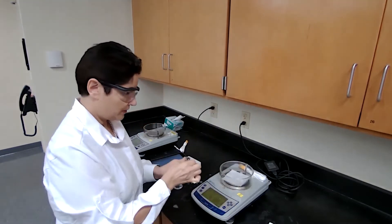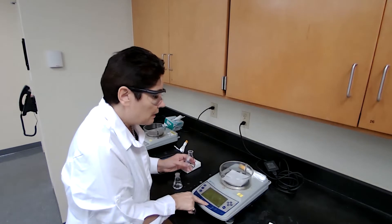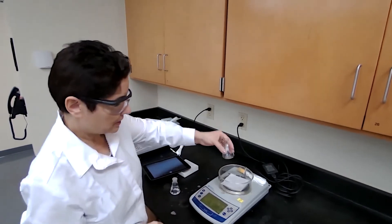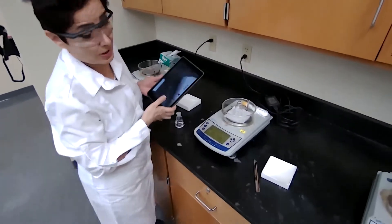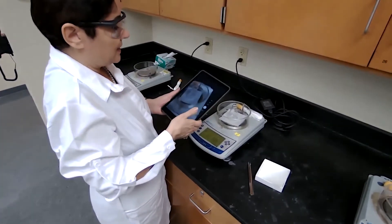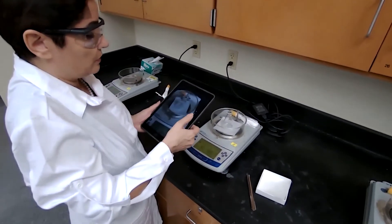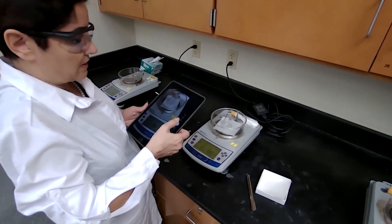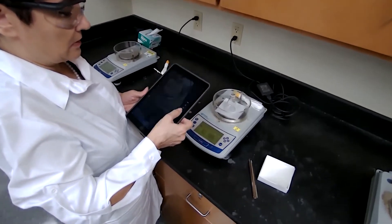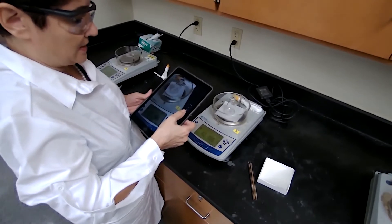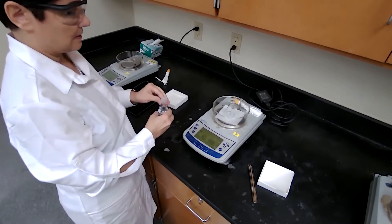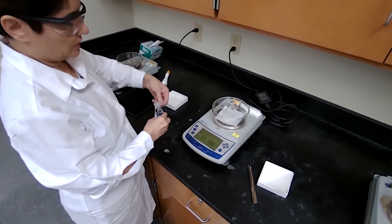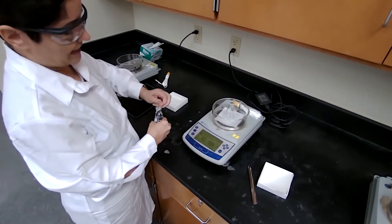We need a pre-weighed container. Tare off the balance or scale, place the clean dry flask. If more than one group is working here, you must label your container. So I have the mass of the empty flask.